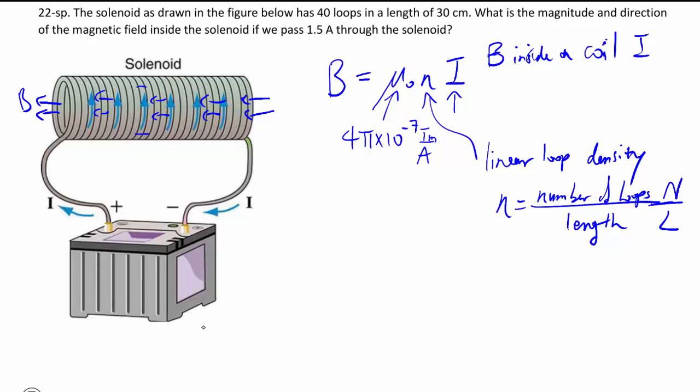So then the last thing is just to sub in all these numbers. We got the length, we got the loops, and we've got the current. So we have everything. First, we can say n is equal to 40 loops per 0.3 meters, which we can just plug into the next equation.